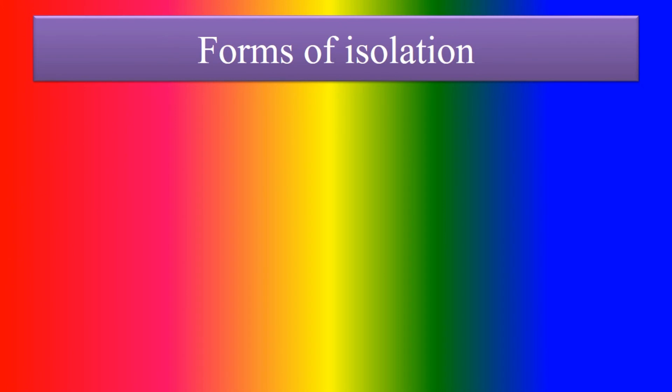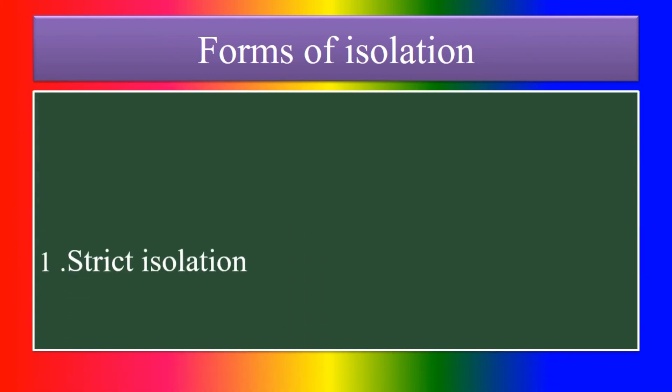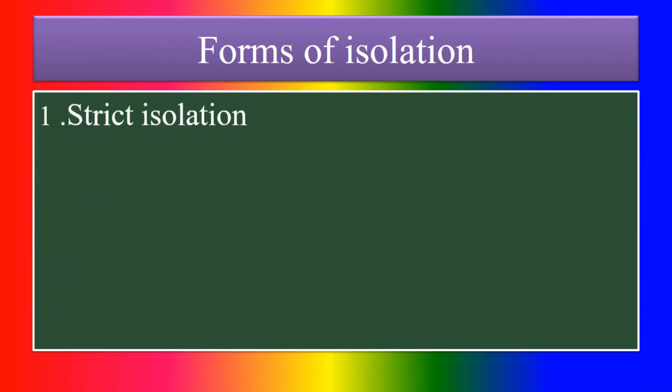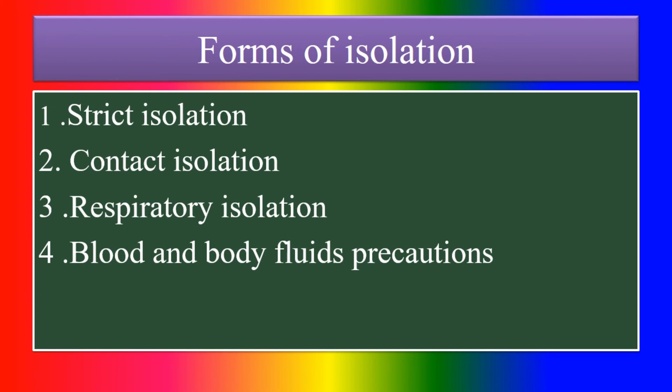Types of isolation in hospital: strict isolation, contact isolation, respiratory isolation, blood and body fluid precaution, and reverse isolation.